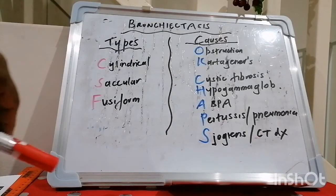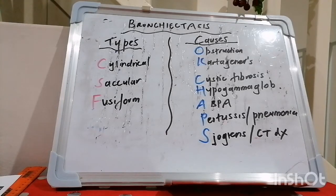The different pathophysiological subtypes are remembered by the simple mnemonic CSF: C stands for cylindrical, S is saccular, and F is fusiform or varicose.